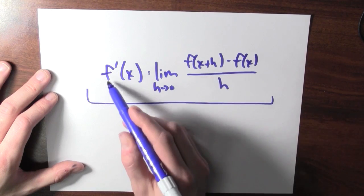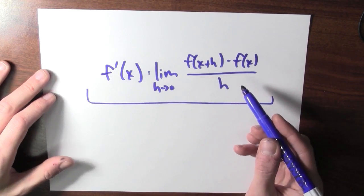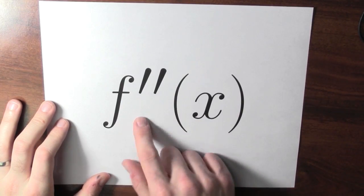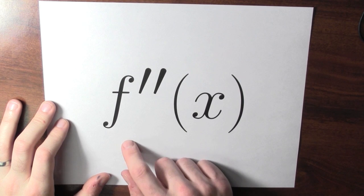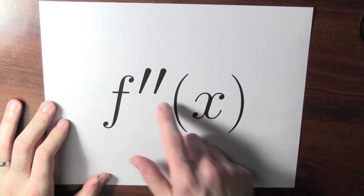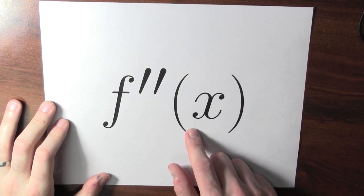The derivative is a function. Since the derivative is itself a function, I can take the derivative of the derivative. I'm often going to write the second derivative — the derivative of the derivative — as f double prime of x.